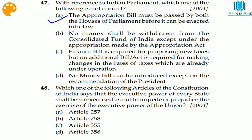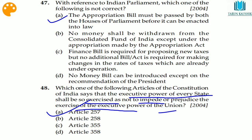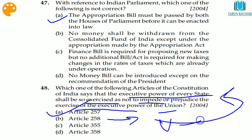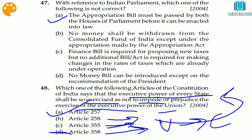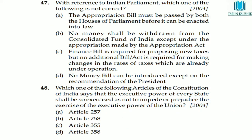Question 48: which article of the Indian Constitution says that the executive power of every state shall be so exercised as not to impede or prejudice the exercise of the executive power of the Union? This is Article 257. Article 258 allows the Union to give advice to states. Article 355 covers external aggression and internal disturbance, and Article 358 provides for the suspension of the fundamental right under Article 19 — the right to freedom — during an emergency.